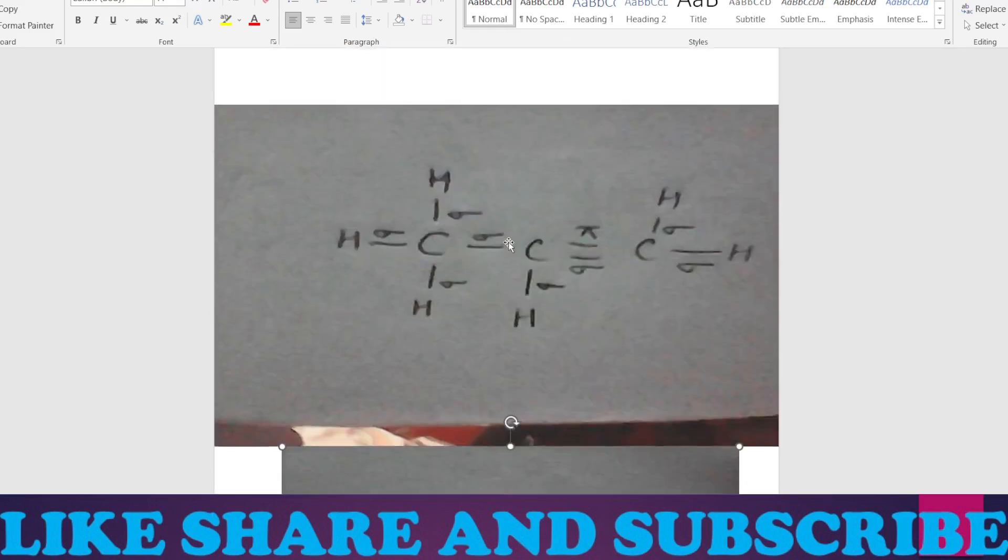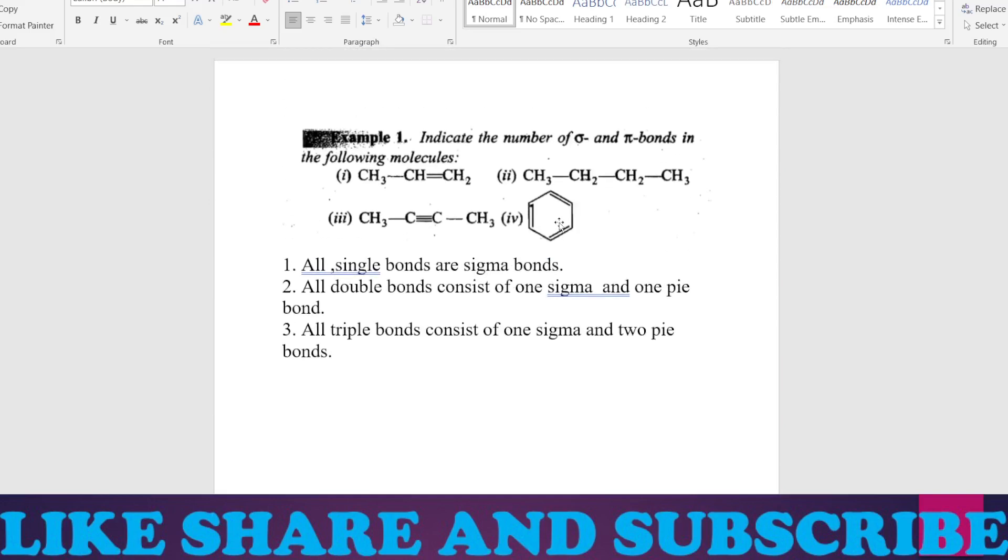You can tell me the answer of this last IV, the benzene ring. What is the number of sigma bonds and pi bonds in the comment section? So let's look to the answer.